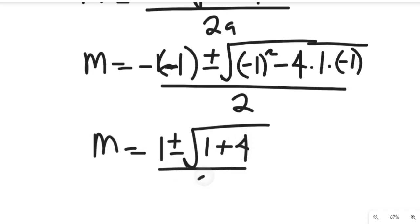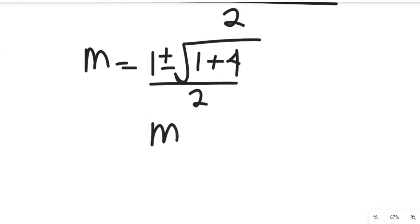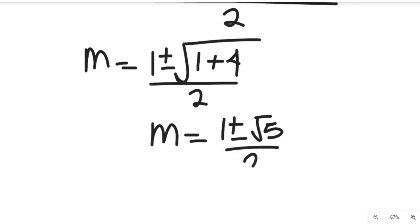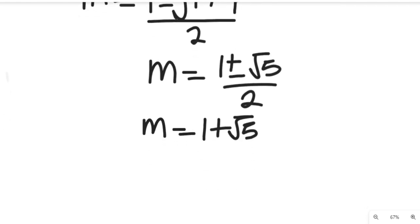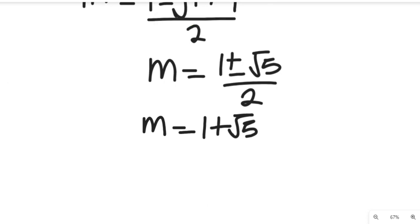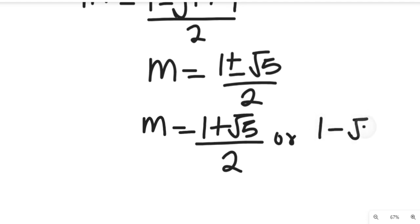Simplifying, m will be equal to 1 plus or minus the square root of 5, divided by 2. Expanding the two cases: m equals 1 plus root 5 divided by 2, or m equals 1 minus root 5 divided by 2.